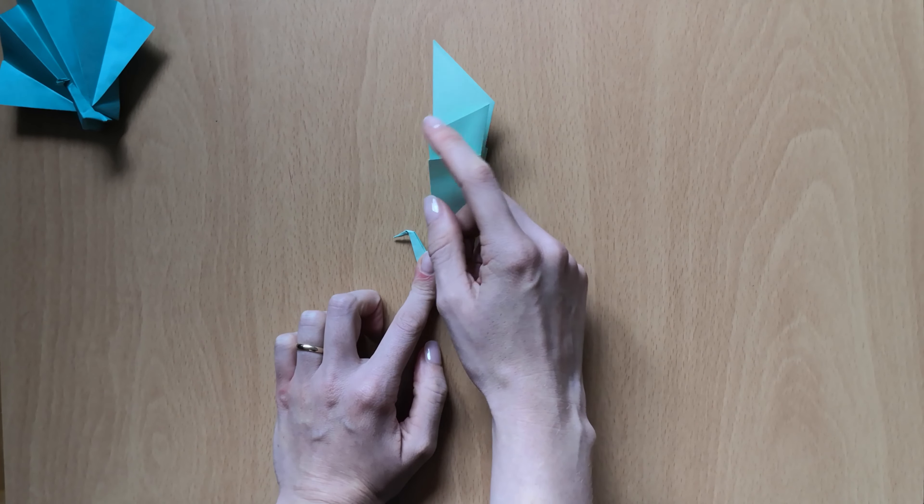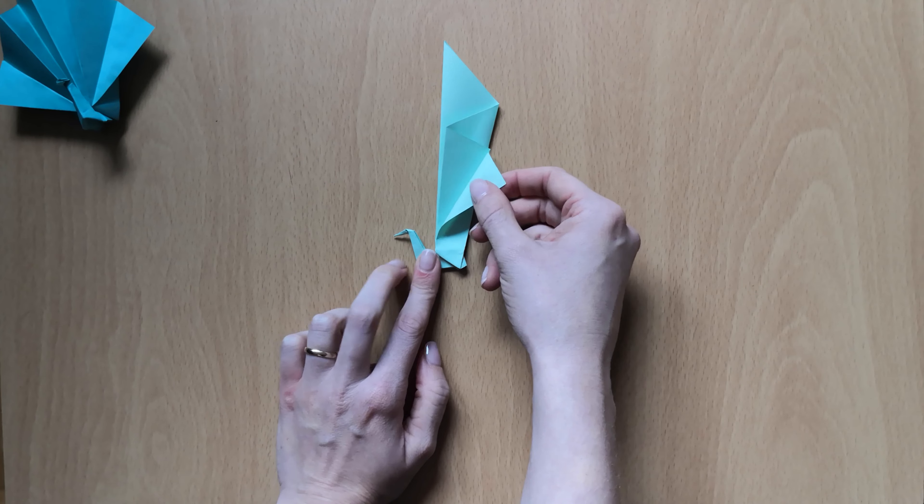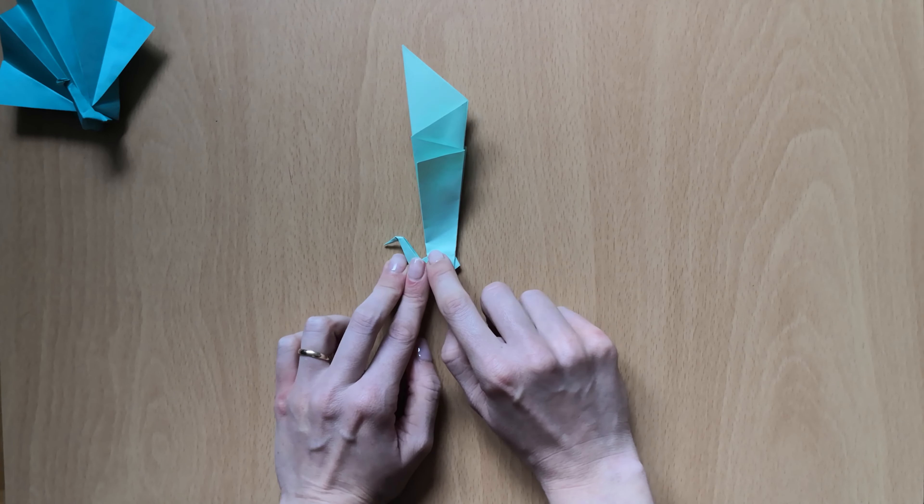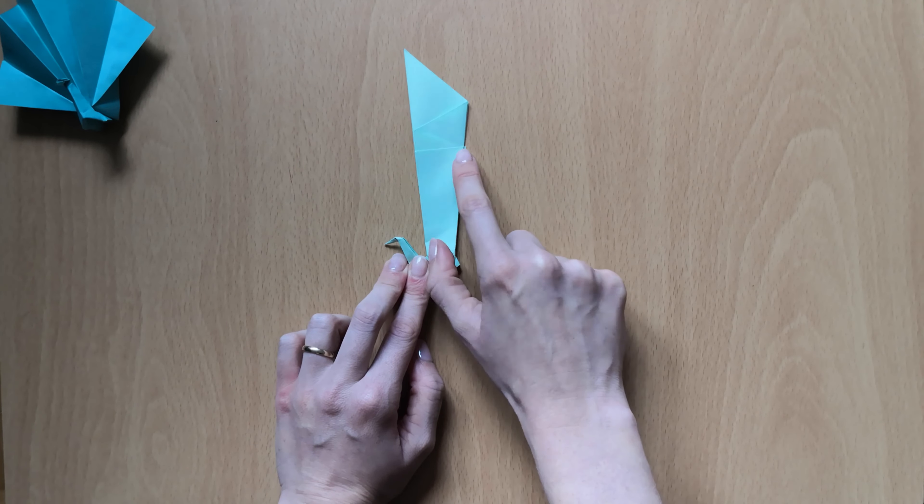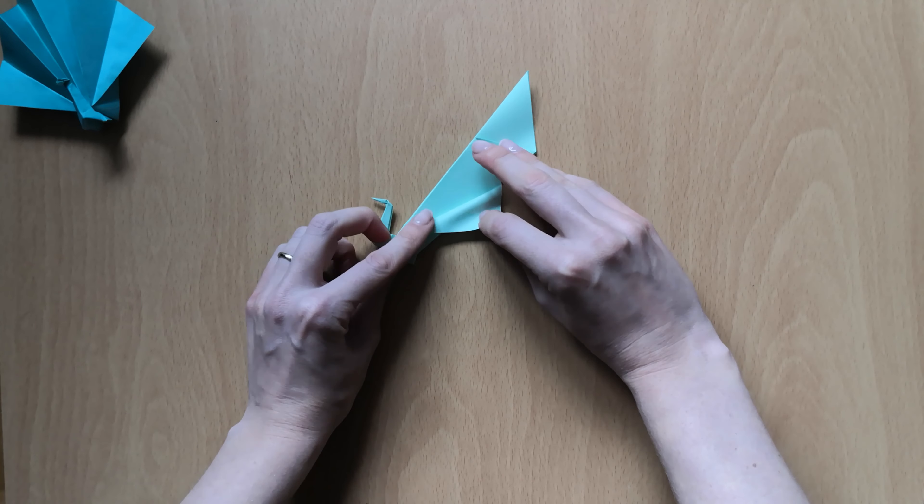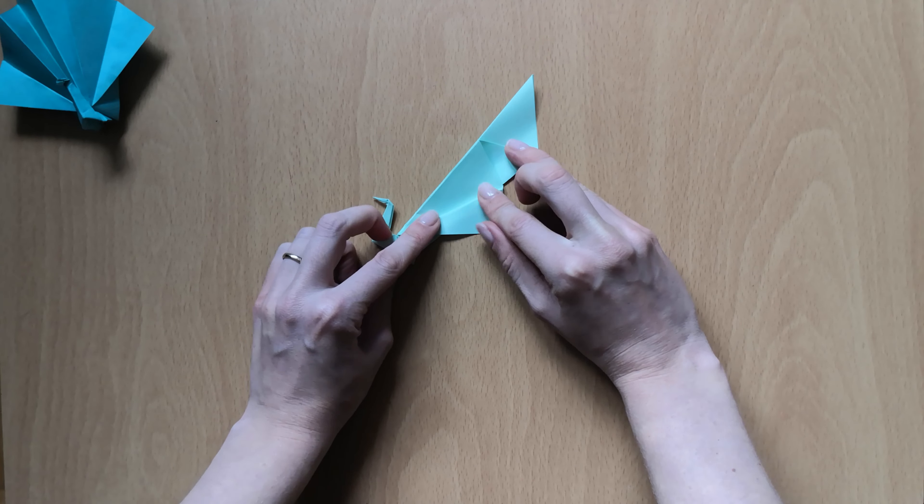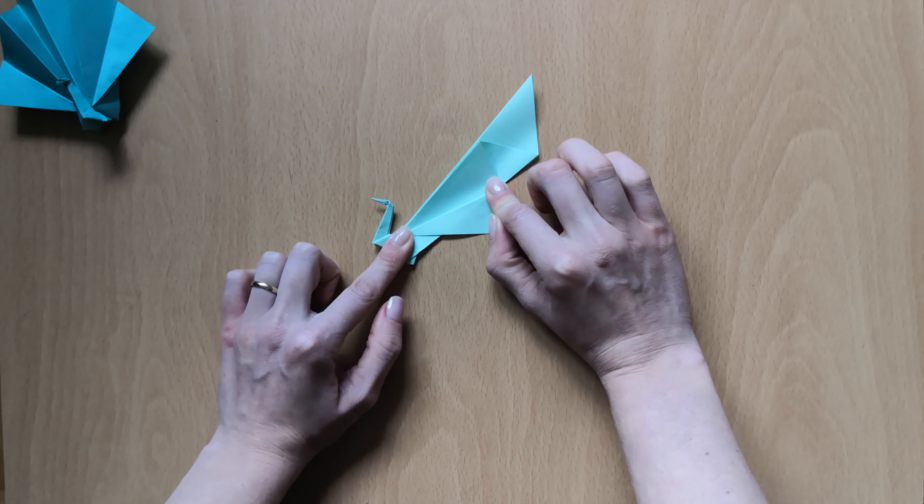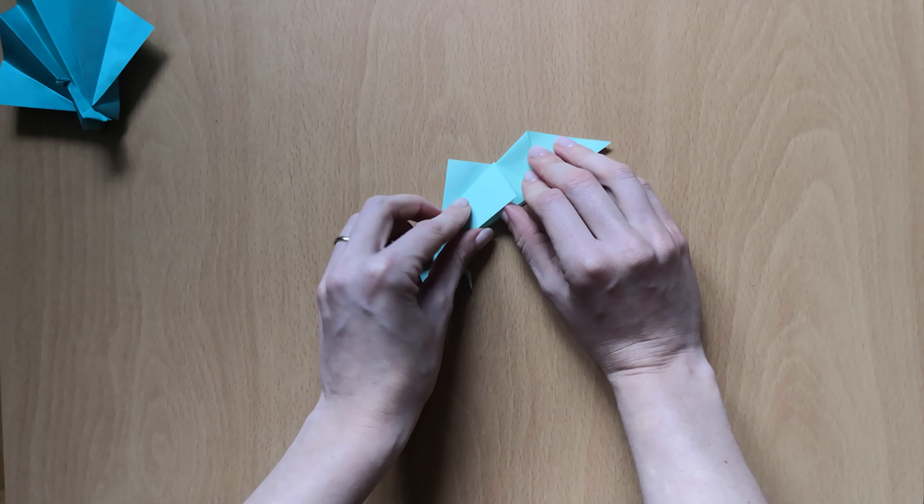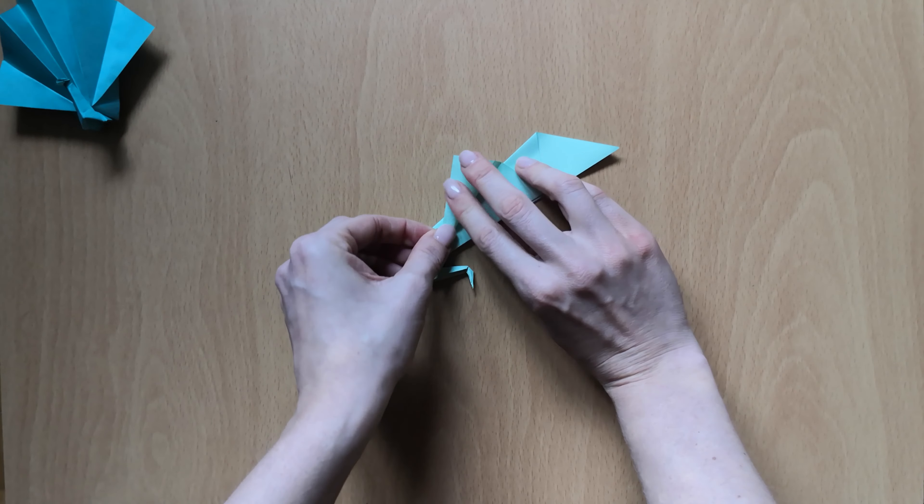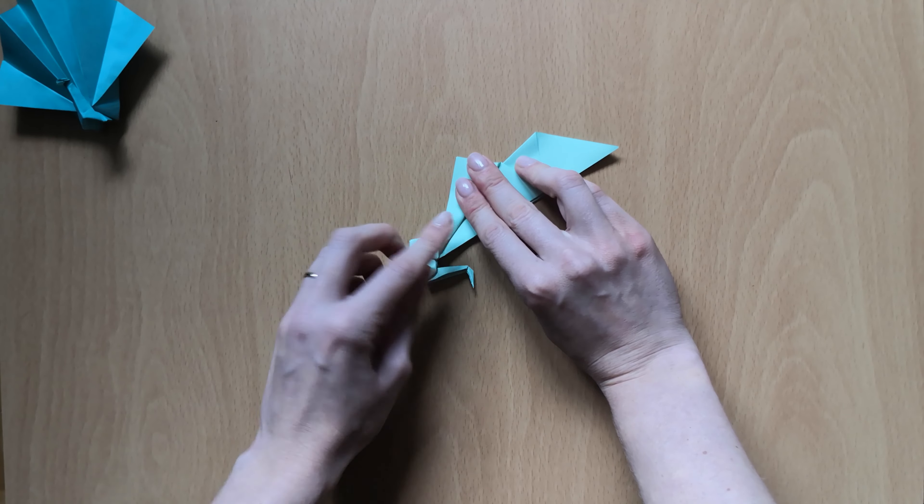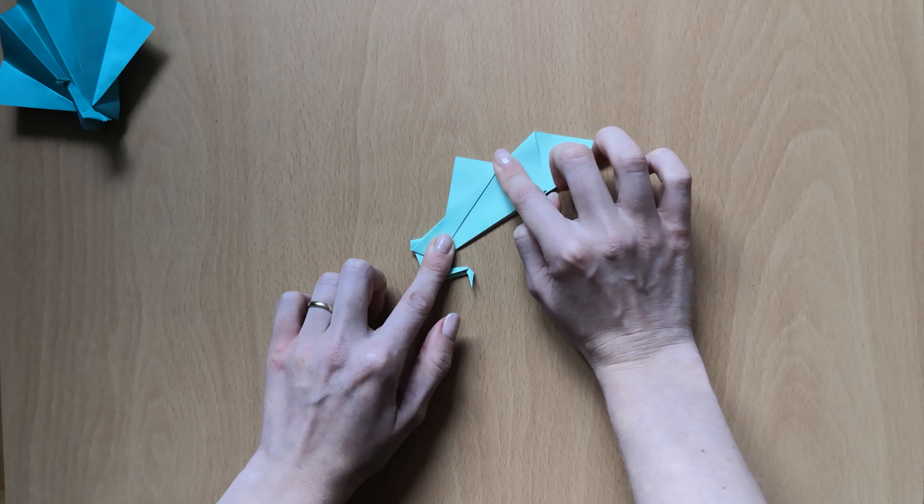We'll open this upper flap of the paper and fold it from this corner here to this corner here. So fold it in a diagonal on one side. And turn it over and then the same with this side.